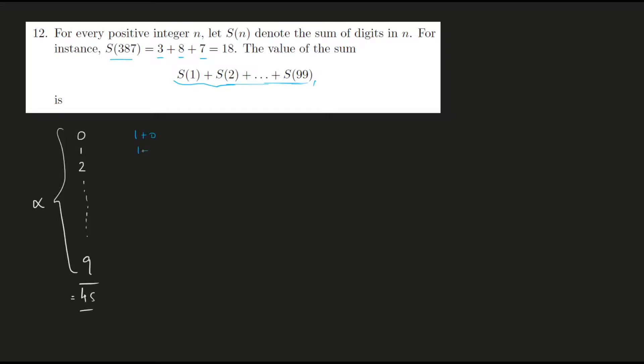S of 11 is 1 plus 1, and so on up till S of 19, which is 1 plus 9. What you need to observe here is that you have one more alpha going on here. You have numbers from 0 to 9 once again, so we have one more alpha.